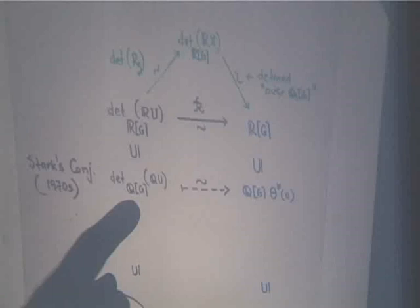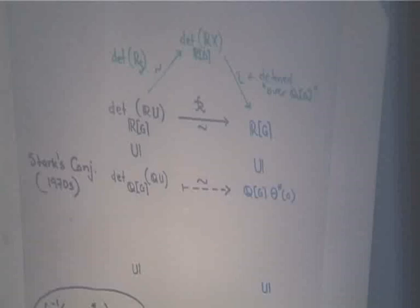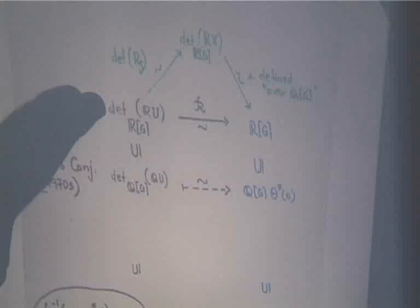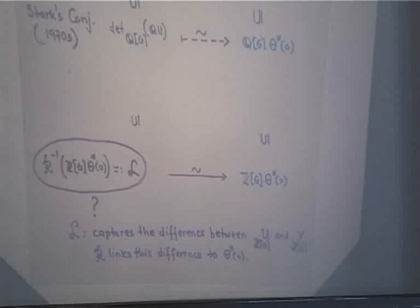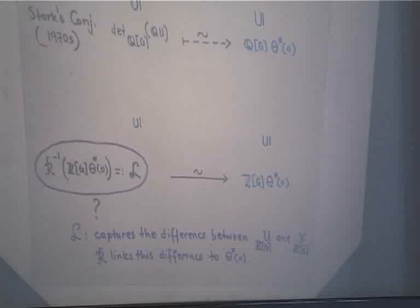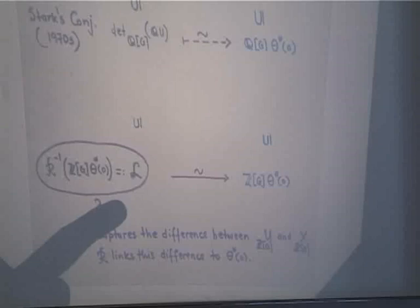One of the most important unsolved problems in number theory today is trying to understand this lattice L — this free Z[G]-submodule of this R[G] space. If we understand it, then a lot of unsolved problems will just end up being solved right away. One example is Hilbert's 12th problem: the explicit construction of abelian extensions of global fields. We have no idea how to do that, but if we understand this lattice, then we can.